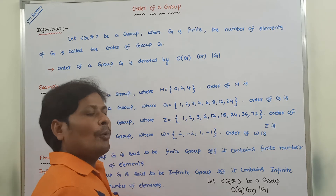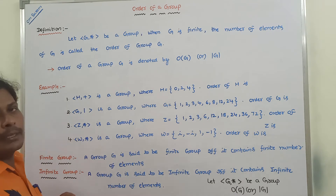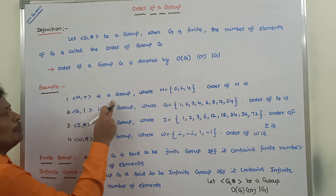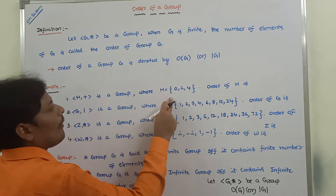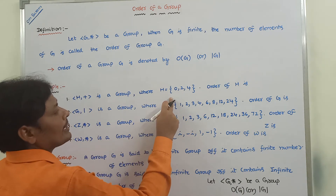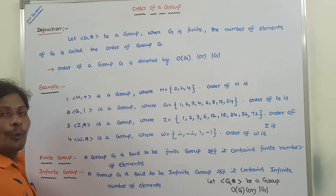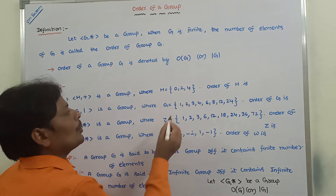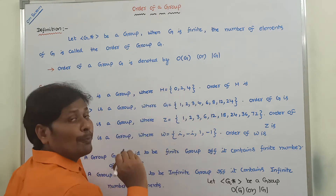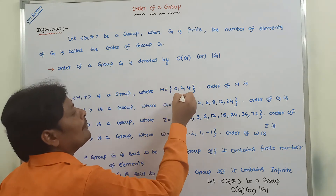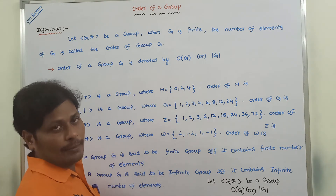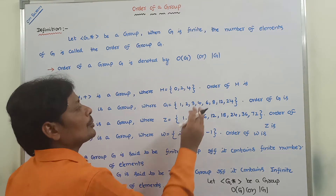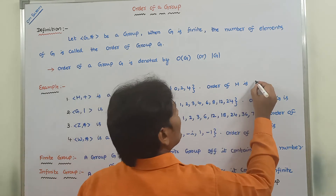Now let us consider some examples. Let (H, +) be a group where H is defined as the set {0, 2, 4}. The order of H means the number of elements of H. There are three elements, therefore the order of H is 3.